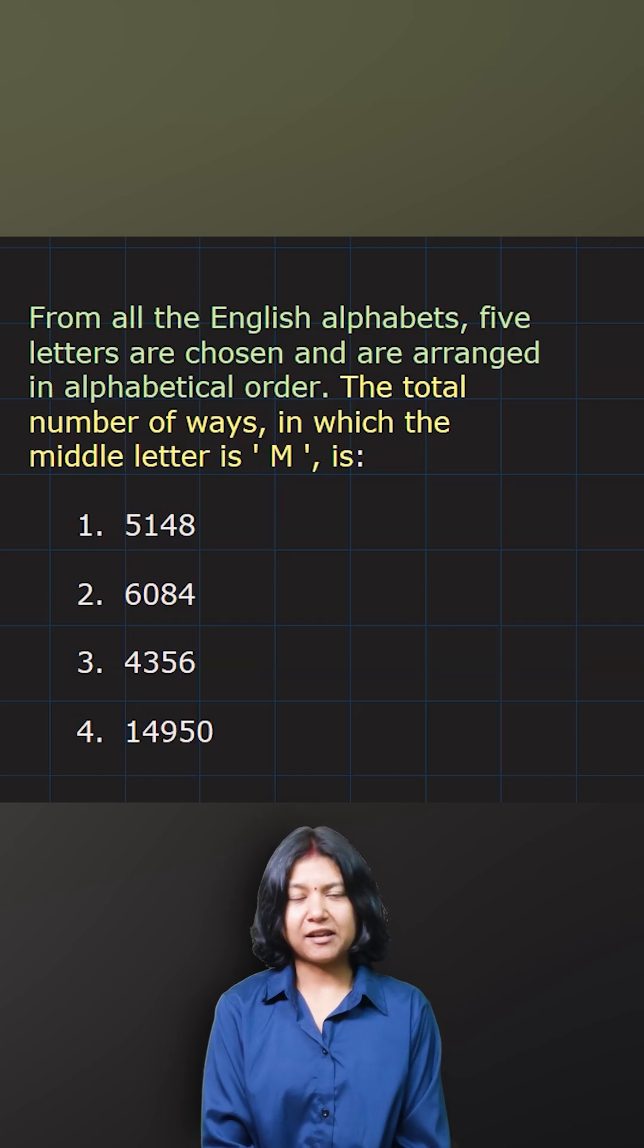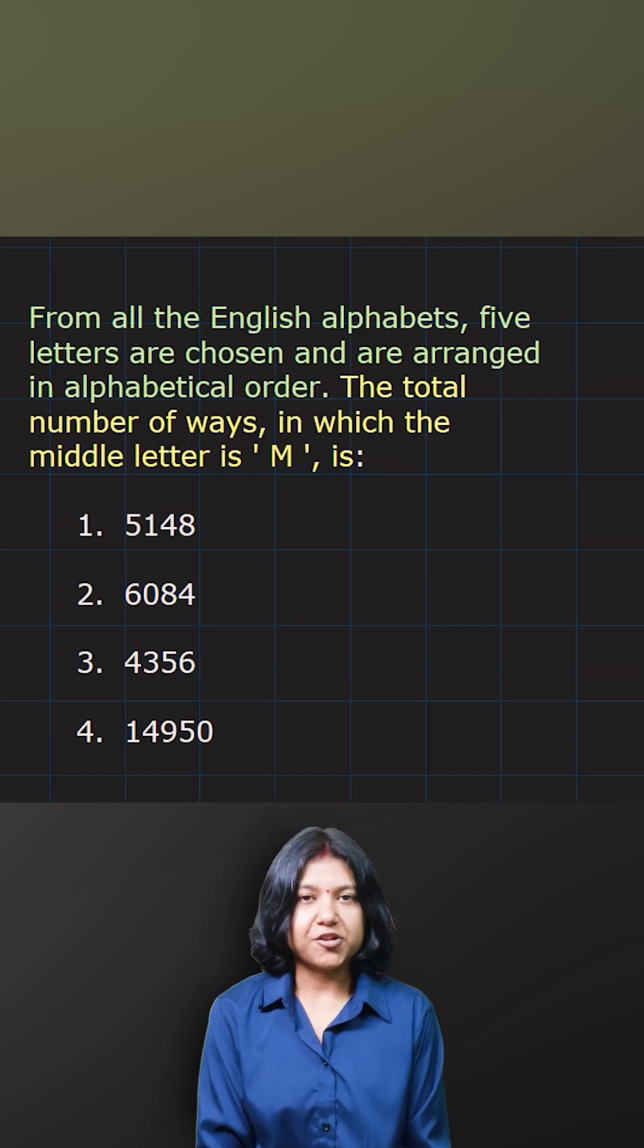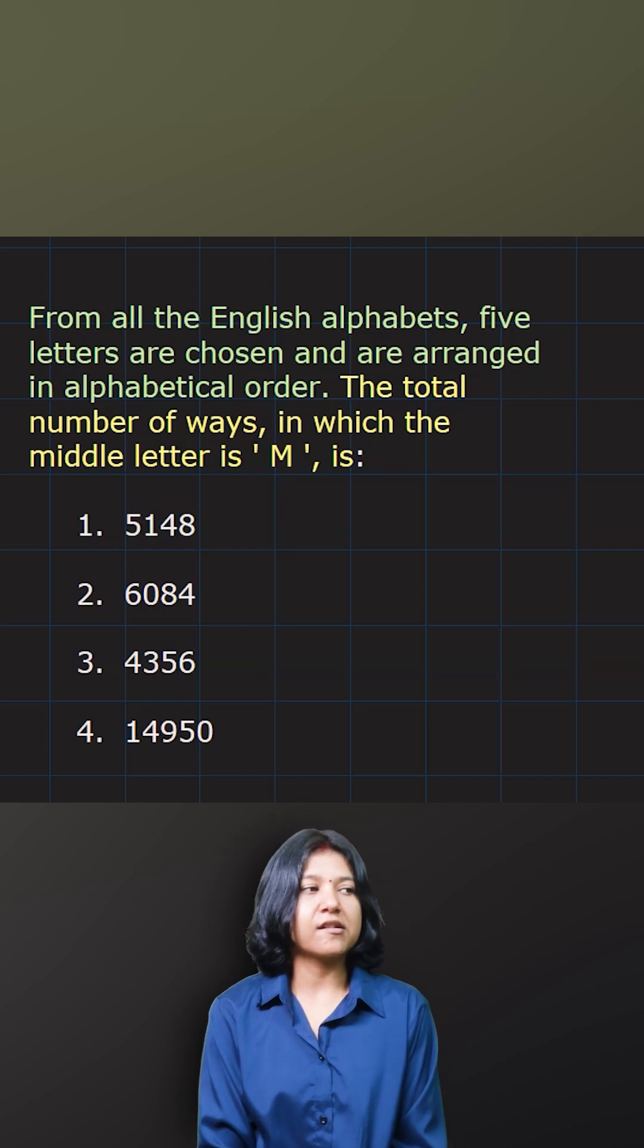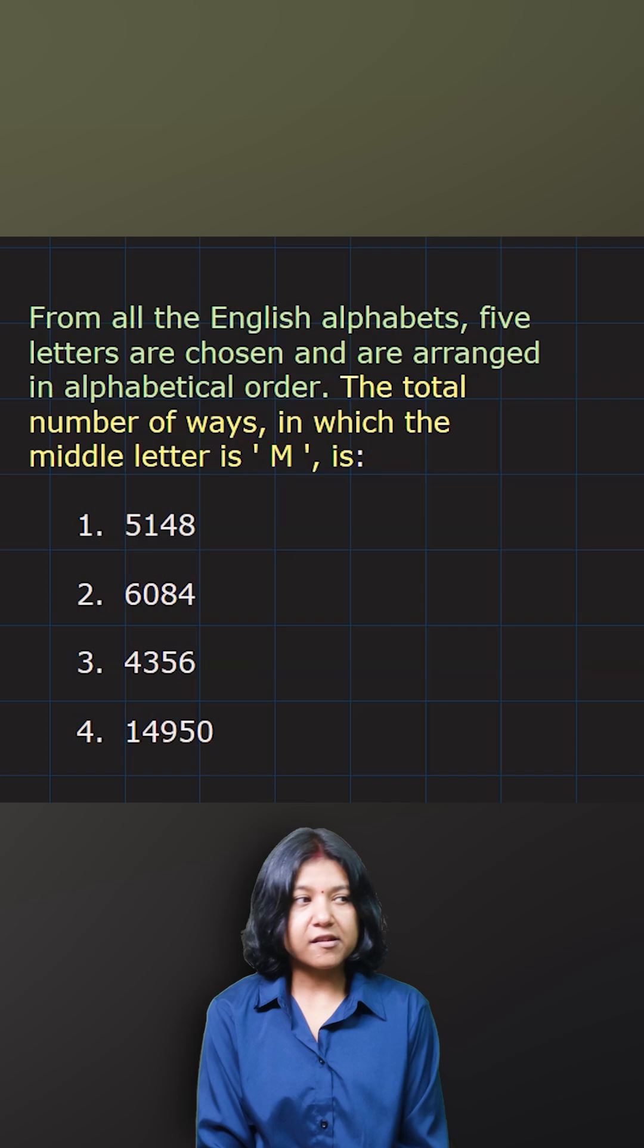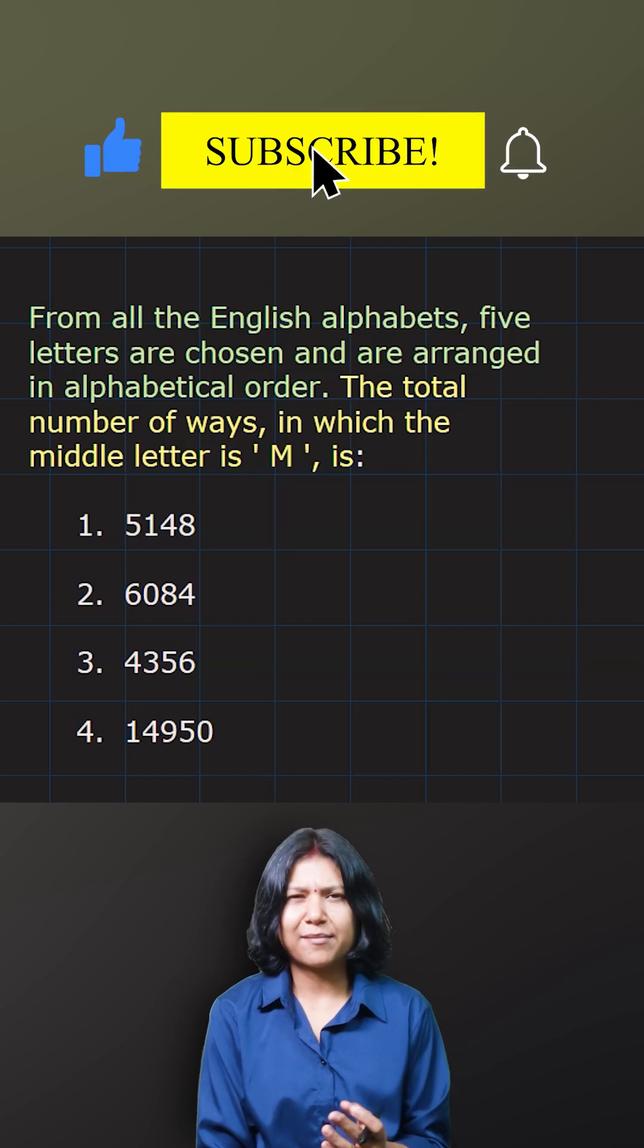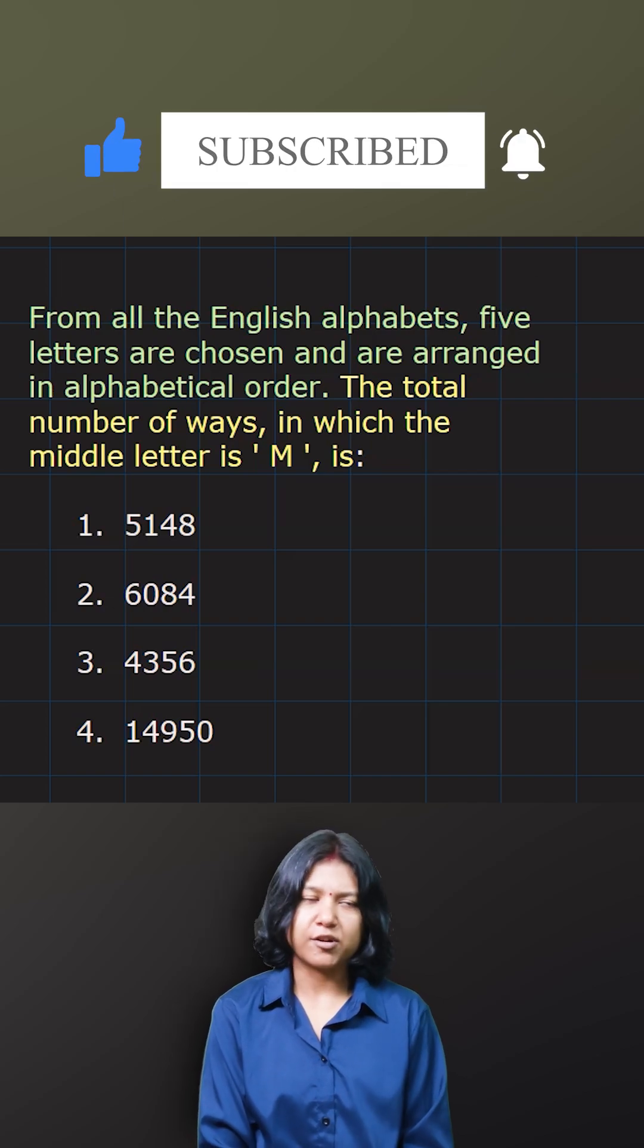This is a question from J.E. Maines, 2025. It's really interesting. Five letters are to be chosen from all the English letters and they're arranged in alphabetic order. The total number of ways in which the letter M is kept in the middle, you have to find the number of ways there.